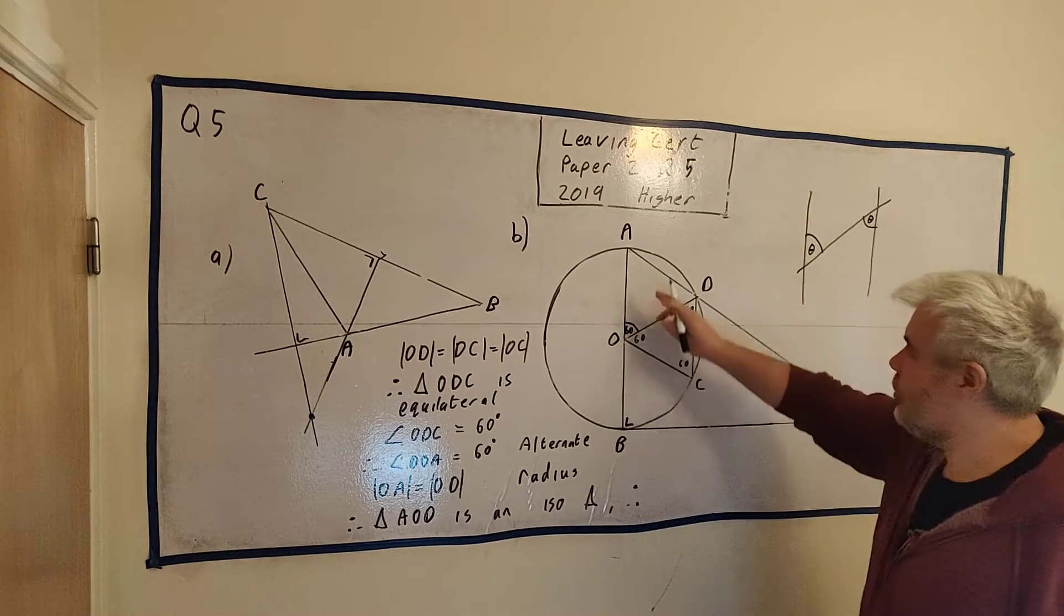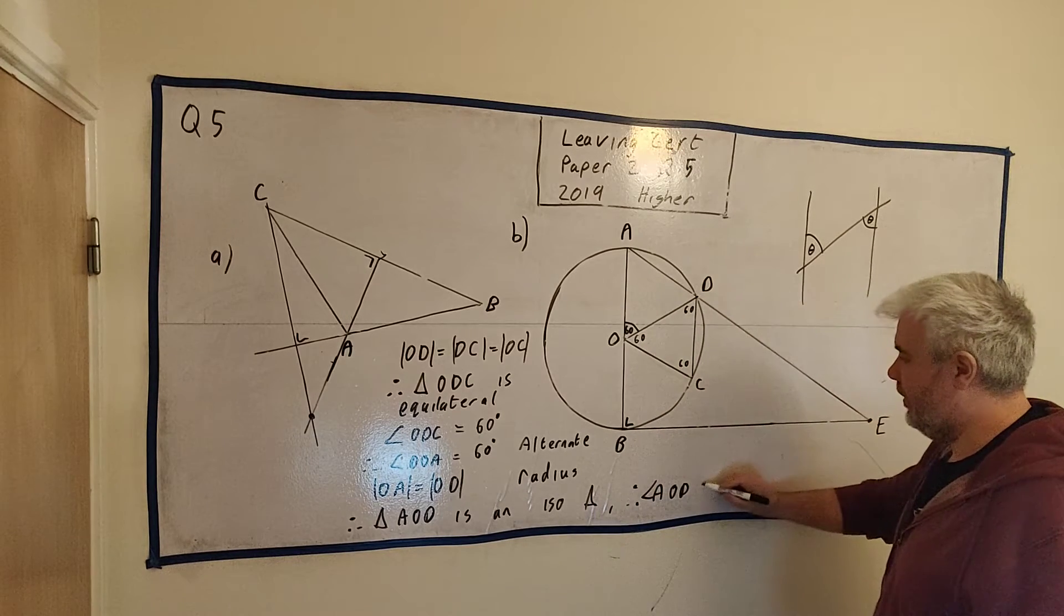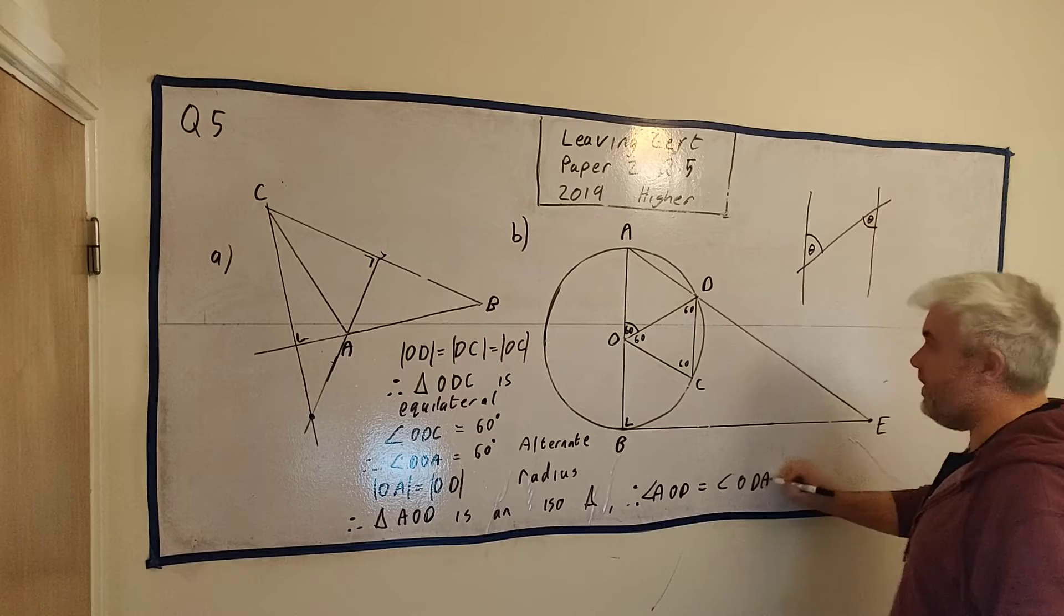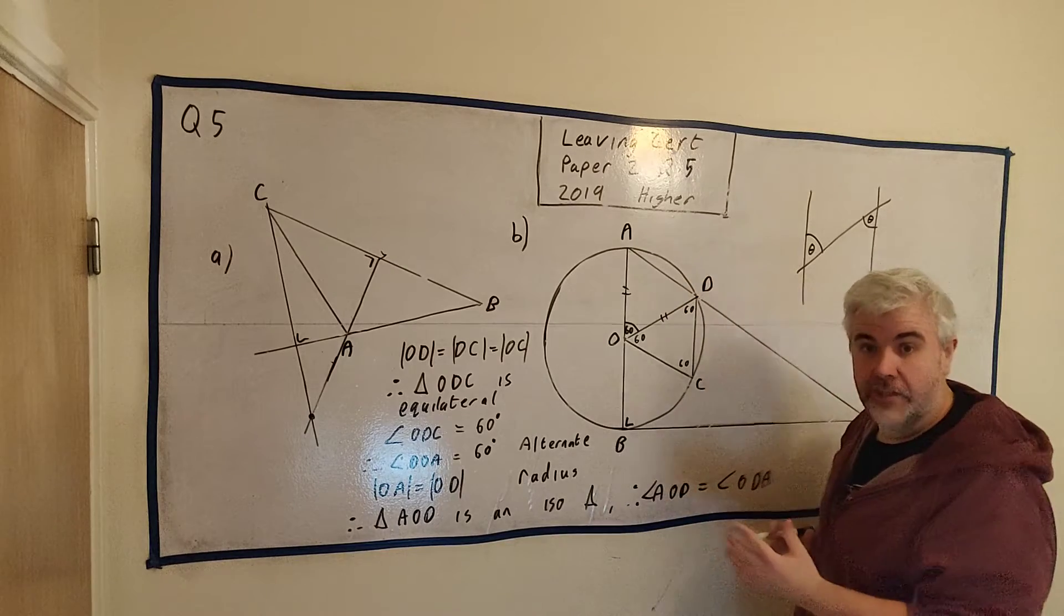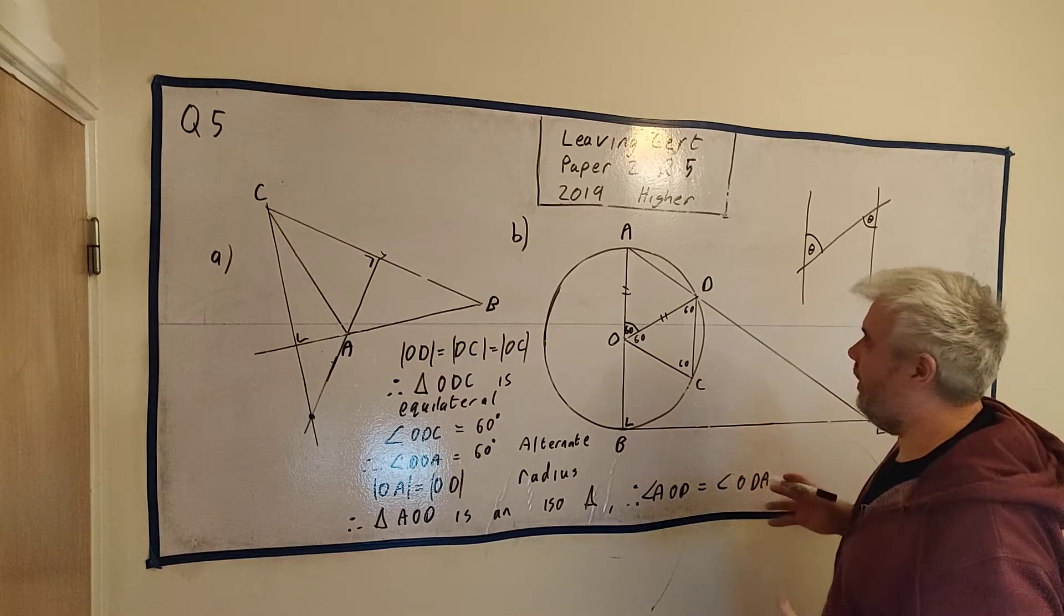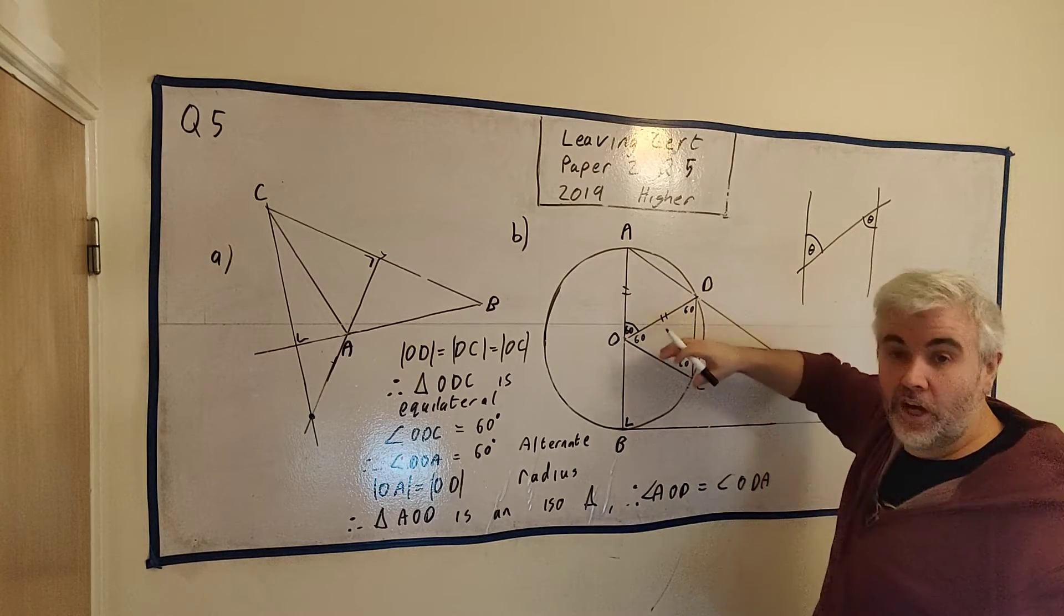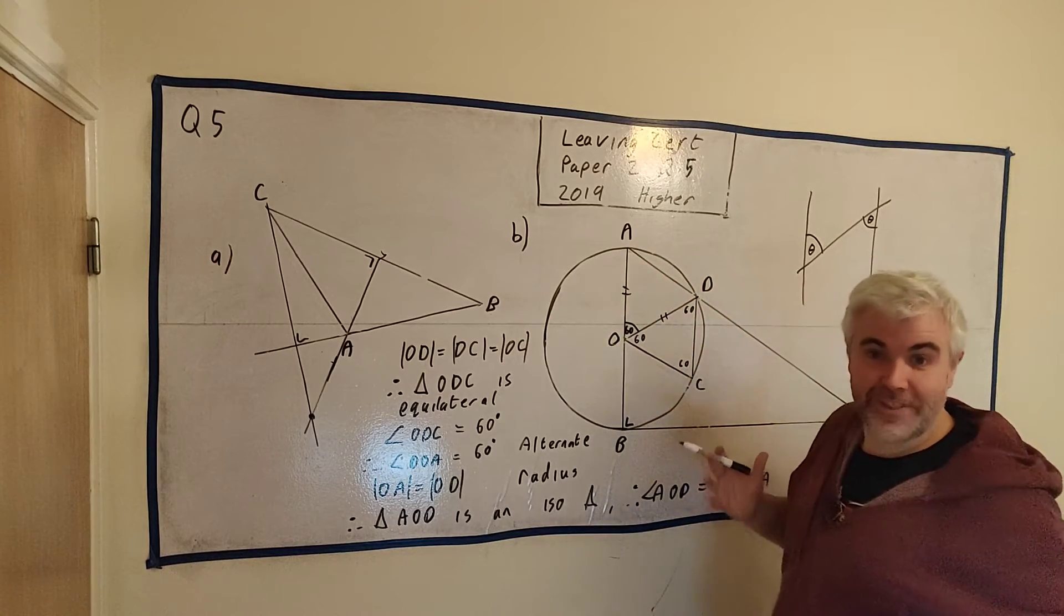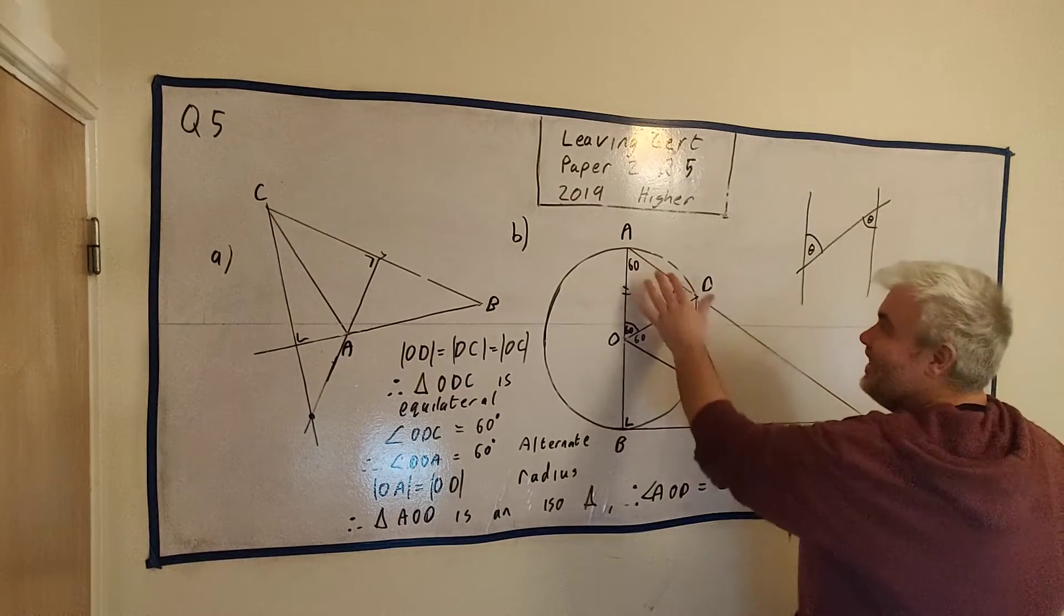I'm running out of a bit of room here. But therefore, the two angles, angle AOD and angle ODA. This angle and this angle are equal. If we have equal sides, we have an isosceles triangle. Again, this is something we've learned from primary school. But it's just putting it all together. So if this angle equals this angle, and we know this is 60, 180 minus 60 just leaves 120. And this must equal this. So what's half of 120? That's 60 and 60.